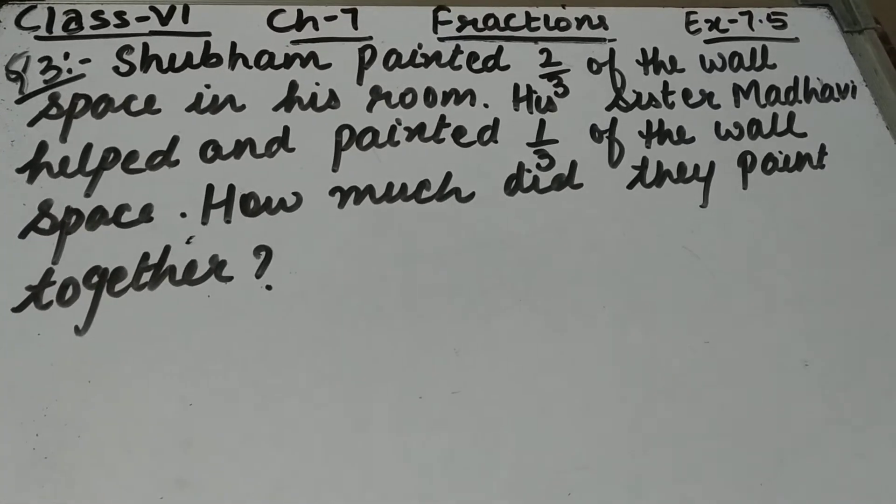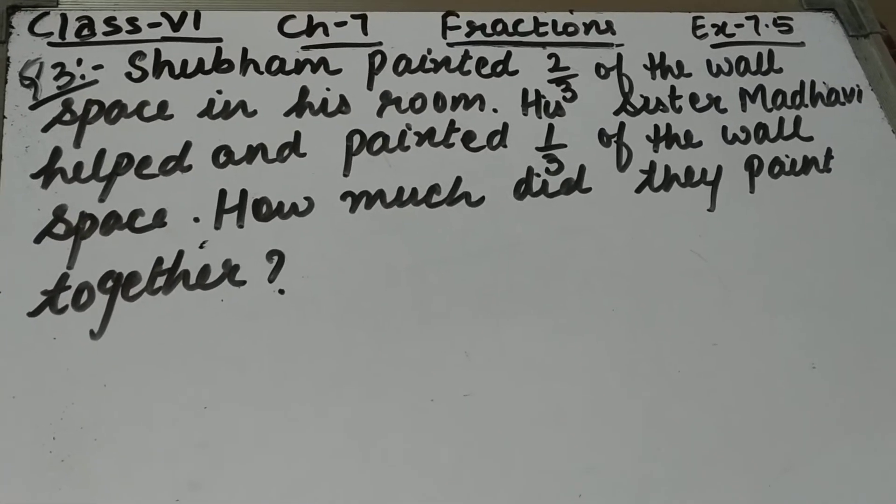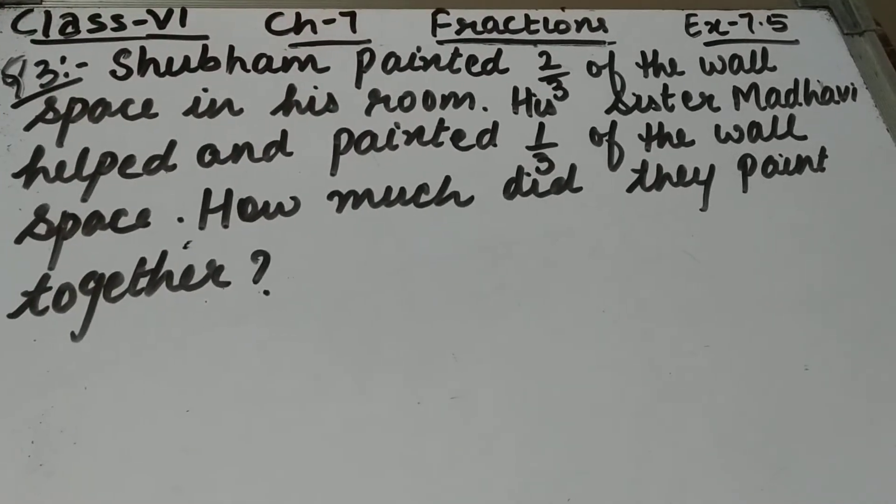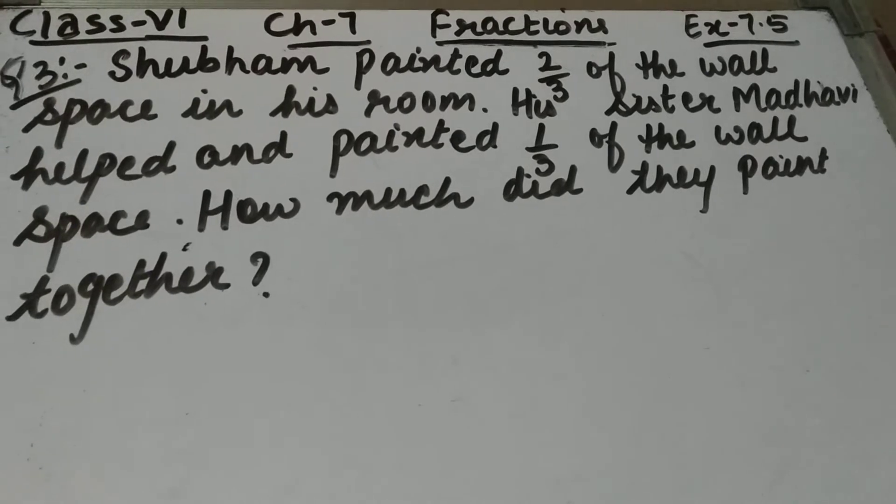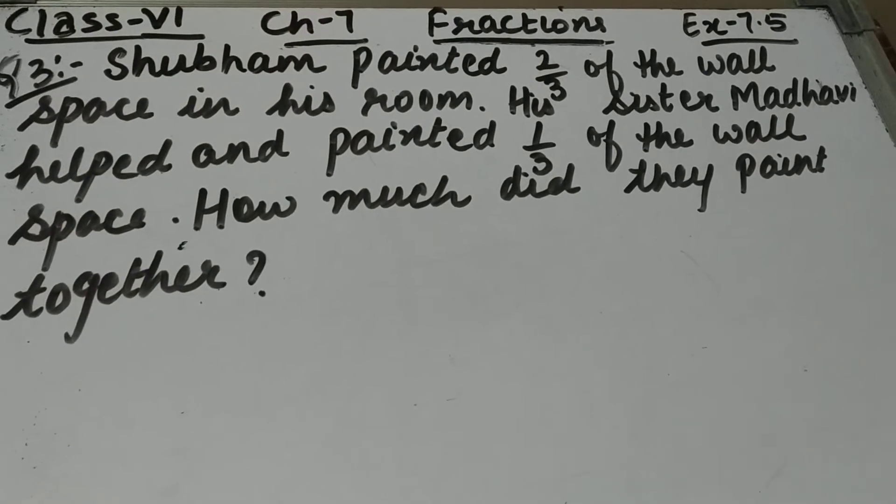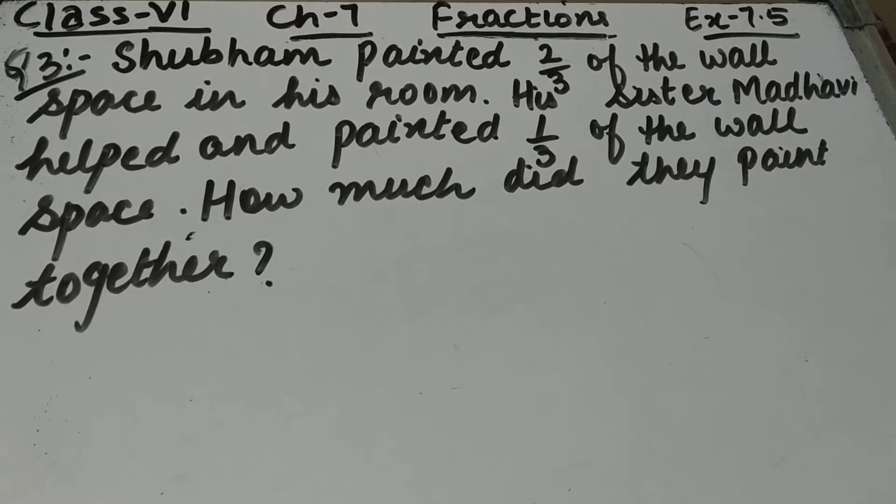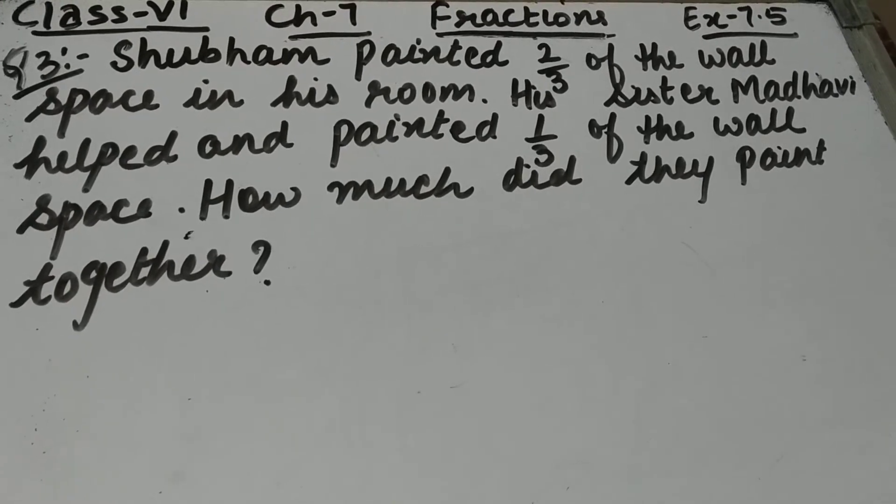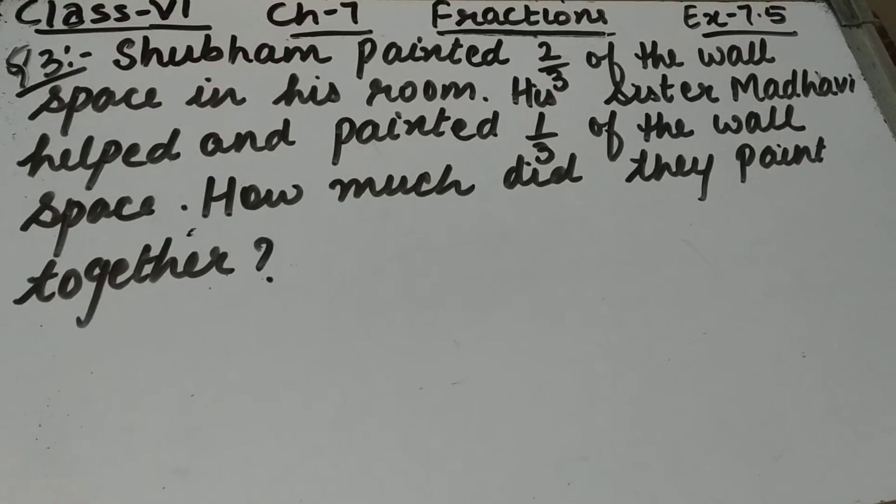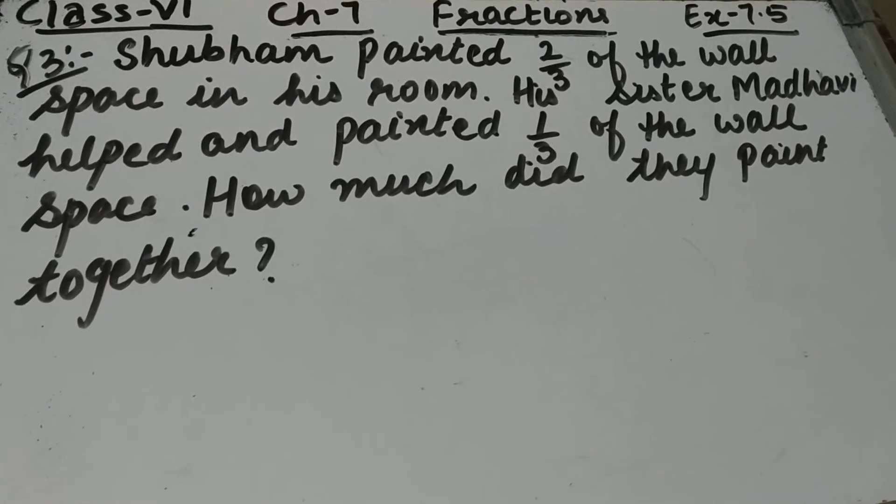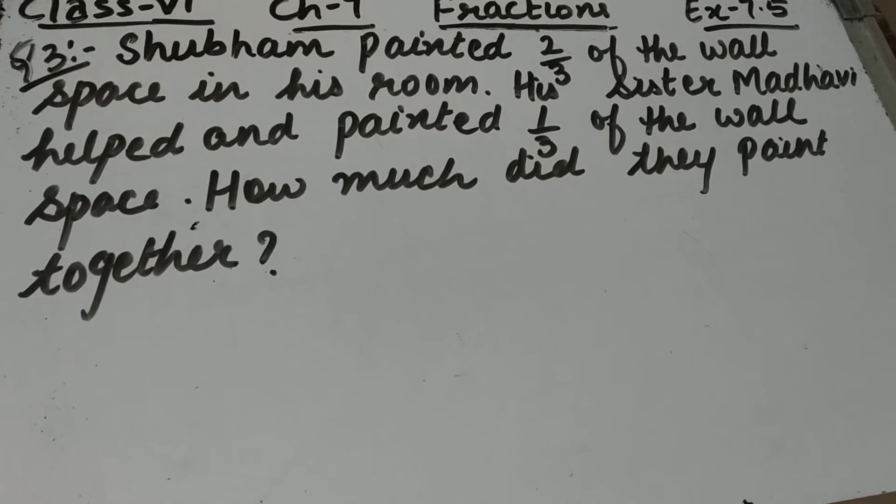Let's start question number 3 of exercise 7.5. The question is: Shubham painted 2/3 of the wall space in his room. His sister Madhvi helped and painted 1/3 of the wall space. How much did they paint together?